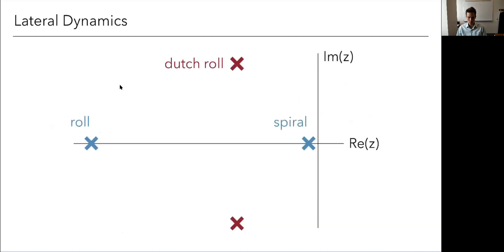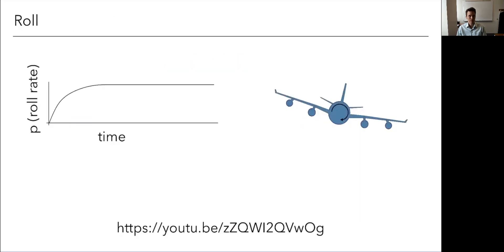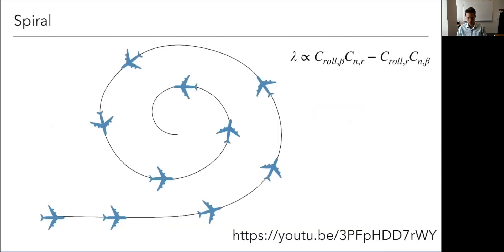This other mode though, spiral mode here on the right, quite a bit more interesting, potentially. This is generally lightly damped and potentially unstable. And this is kind of what it looks like. You can see why it's called spiral mode. It's very lightly damped. What happens is that you get, it's kind of initiates a slow turn.